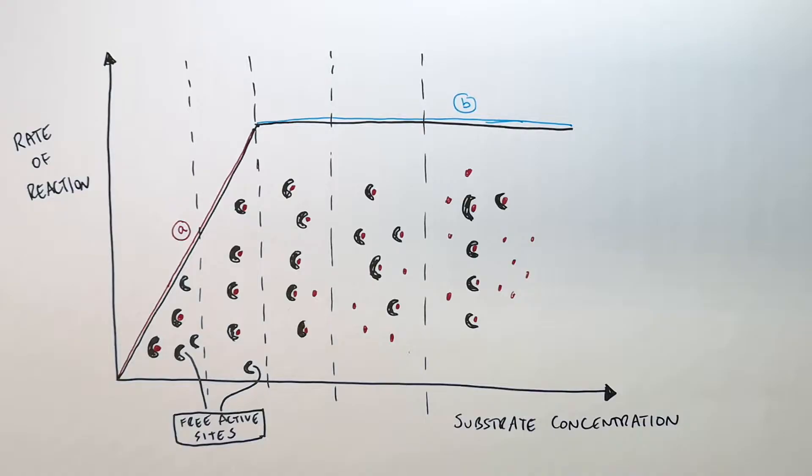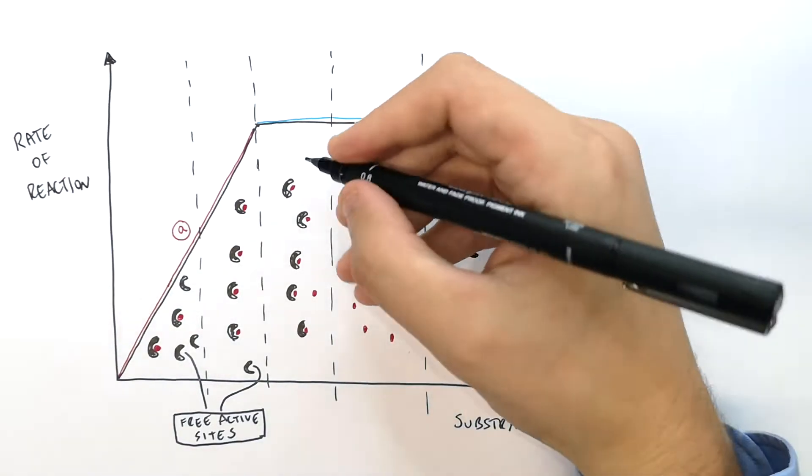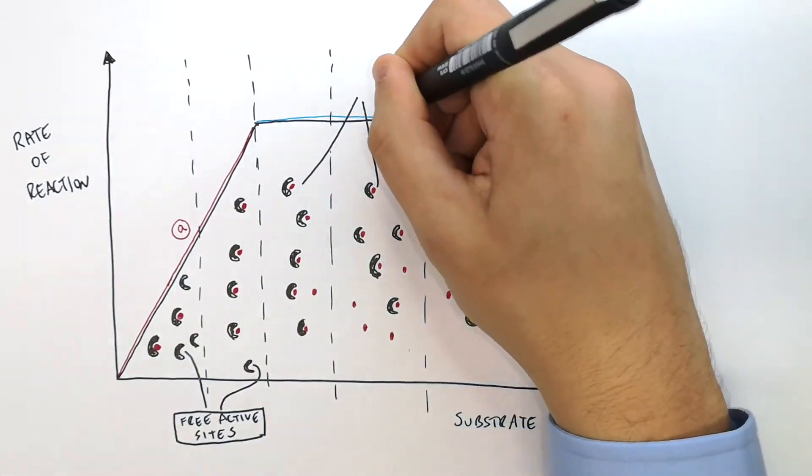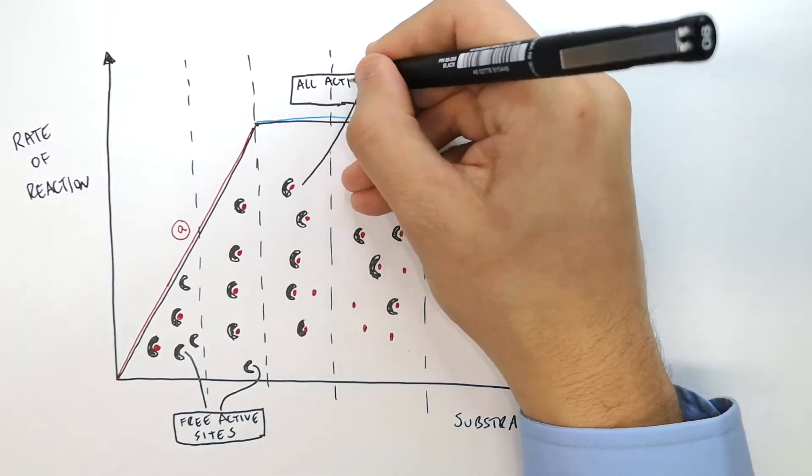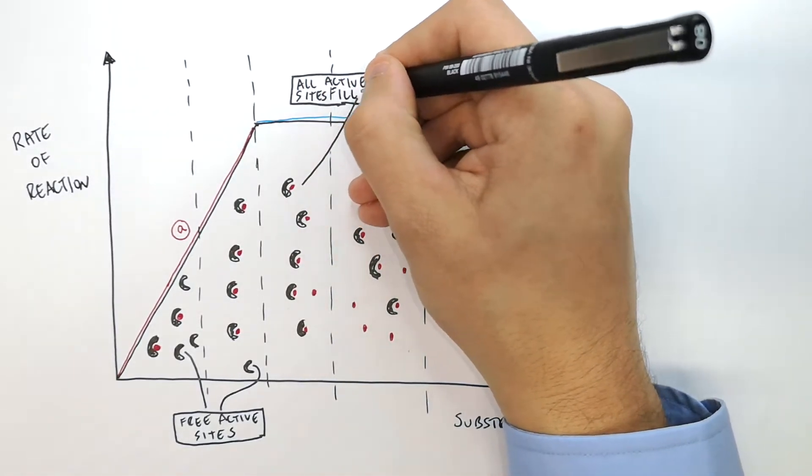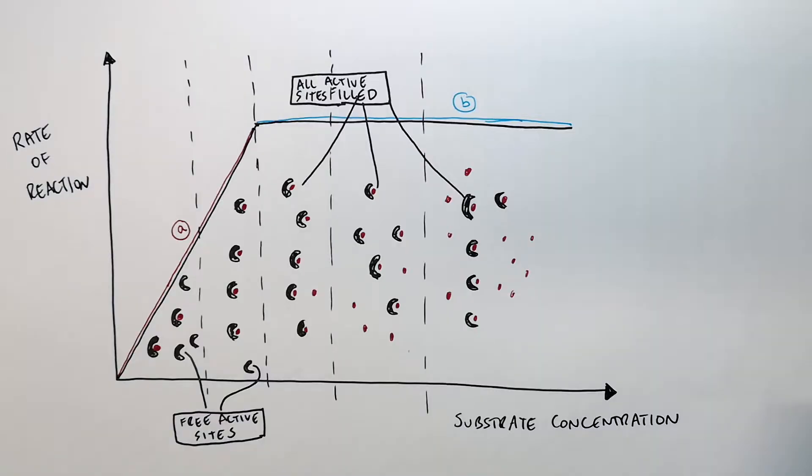So what happens is if you increase the substrate concentration, that means those substrates can bind those free active sites and the rate of reaction will increase until you've got so much substrate in the reaction that all of the active sites are now filled. So now all of the active sites are filled and there are no empty active sites.